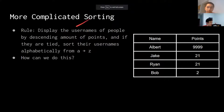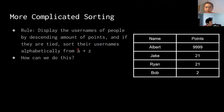More complicated sorting. The rule here is: display the usernames of people by descending amount of points, and if they are tied, sort their usernames alphabetically from A to Z. How can we do this, because now we're taking into account both the number of points and the name?